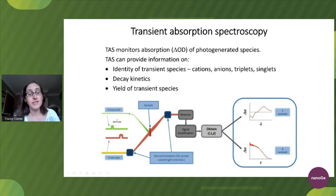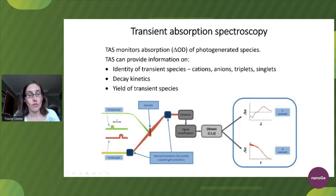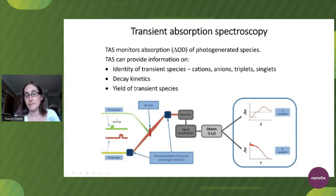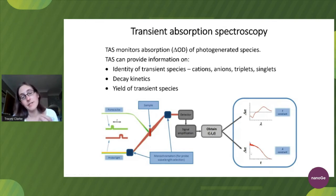It essentially works by a pump pulse which excites our sample, generating our transient species of interest, which is then interrogated by a probe light that is delayed in time, either electronically or via a delay stage. We detect that change in absorption either as a function of wavelength to get a spectrum or as a function of time to get the kinetics. This is often what we see when we look at our absorption spectrum — we get excited state absorption and a ground state bleach. One of the most useful things about TAS is this ability to look at kinetics, to assess how efficiently one species converts into another, which gives us information about how our solar cell works.